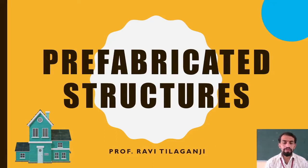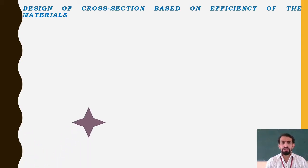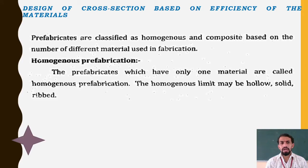Welcome to prefabricated structures. In today's video, we will be looking at the design of cross-sections based on efficiency of materials. In this part, we need to see that prefabricated structures are classified as homogeneous and composite based on the number of different materials used in prefabrication.